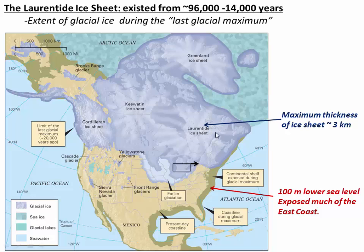Likely here in Vermont we would have had at least a couple of kilometers of ice over us — for perspective, that's like a mile and a half of ice, roughly two or three times the height of our highest peaks like Mount Washington. Sea level was also about a hundred meters lower because all the water was bound up in the ice, meaning the continental edge was almost a hundred kilometers offshore of New Jersey.